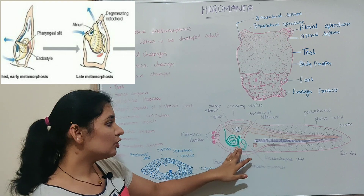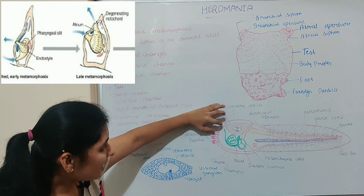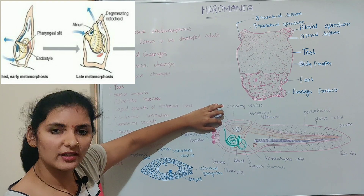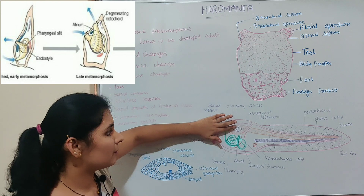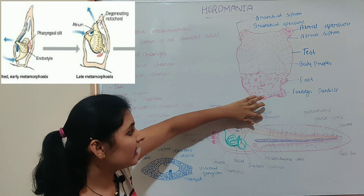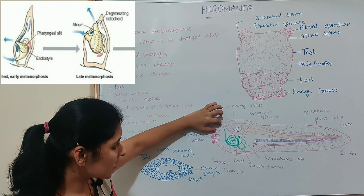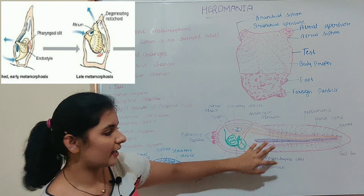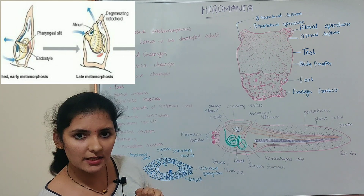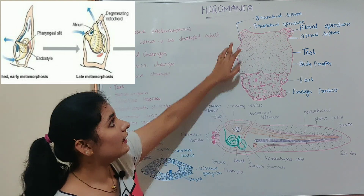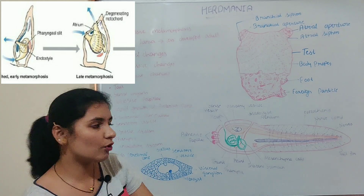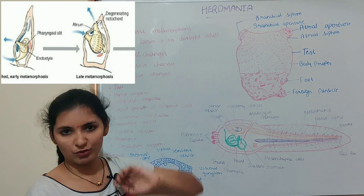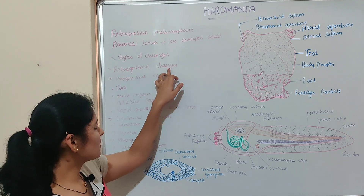Soon after the attachment of the larva to the substratum, the anterior part — the region between the adhesive papillae and the mouth — undergoes rapid growth. However, there is almost no growth in the dorsal part where the atrial aperture is present. Due to this rapid growth on one side, the body parts on the other side start to rotate about 180 degrees, so that the mouth comes to the upper side. As a result, the adult branchial and atrial siphons are formed from the mouth and atrial aperture, and the adult body form is attained.